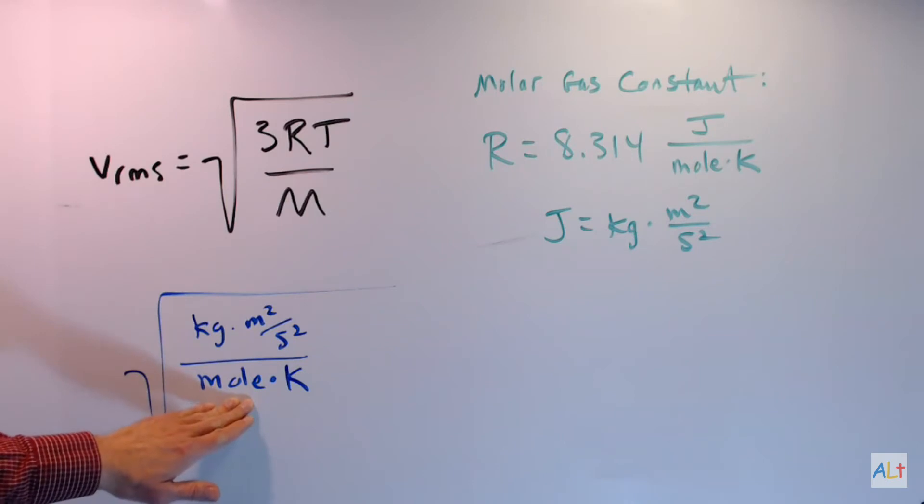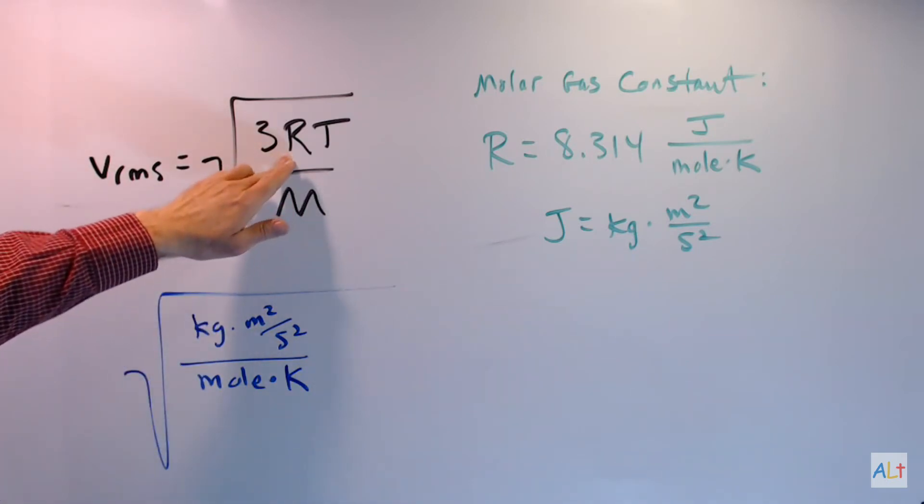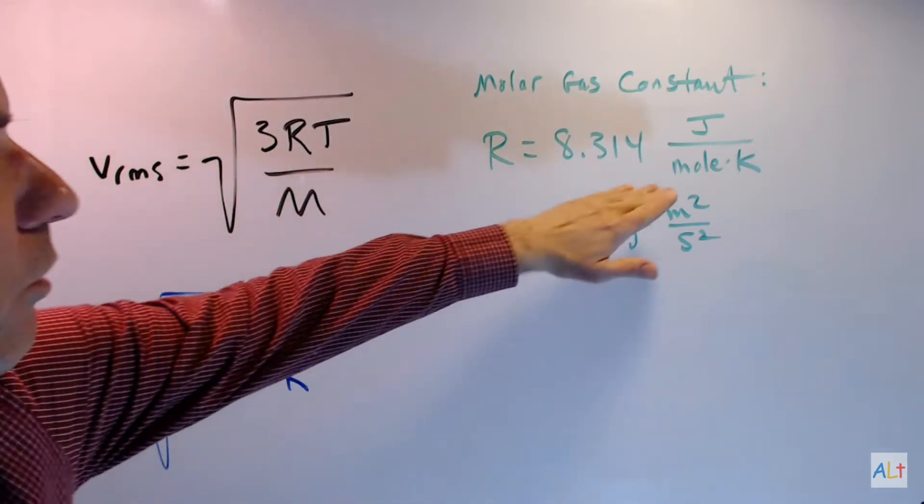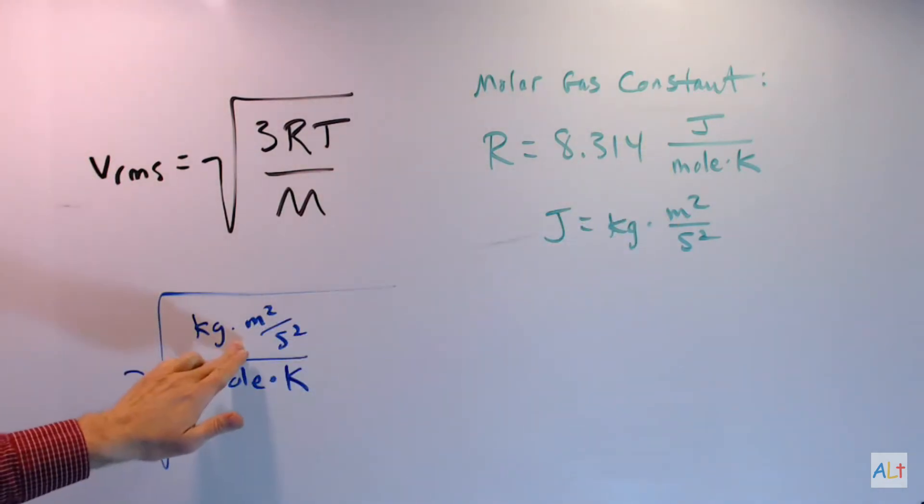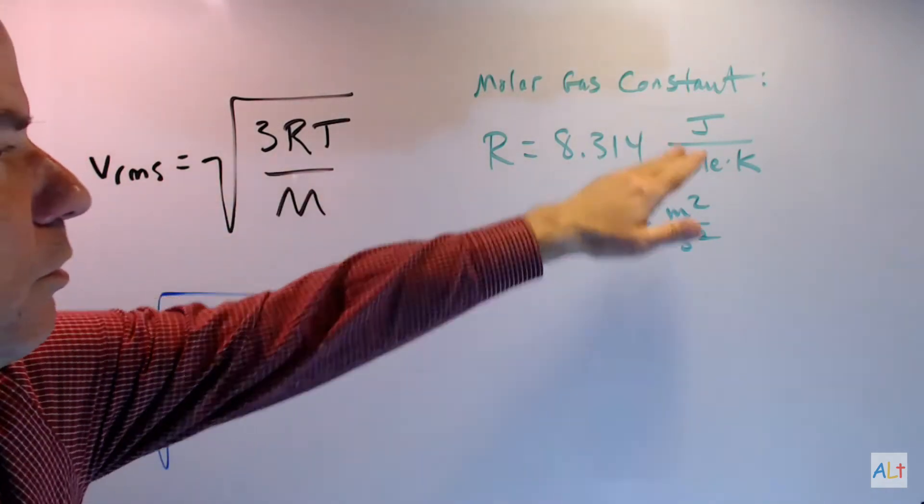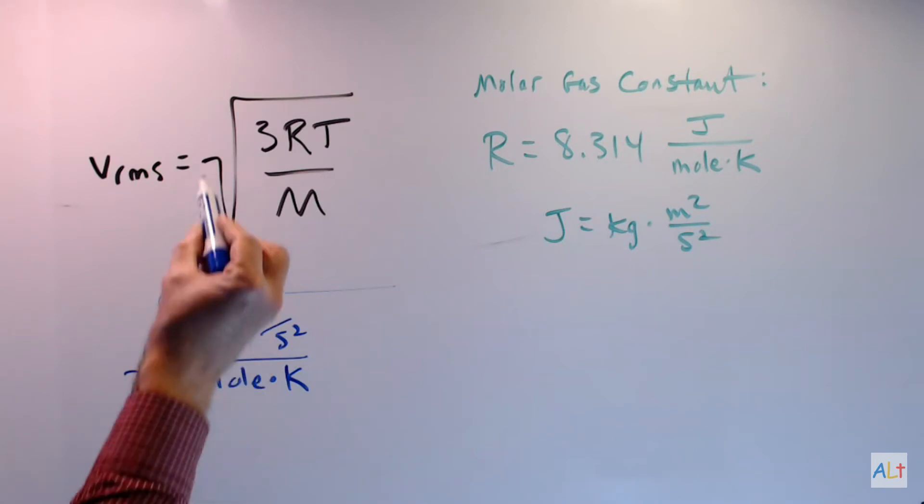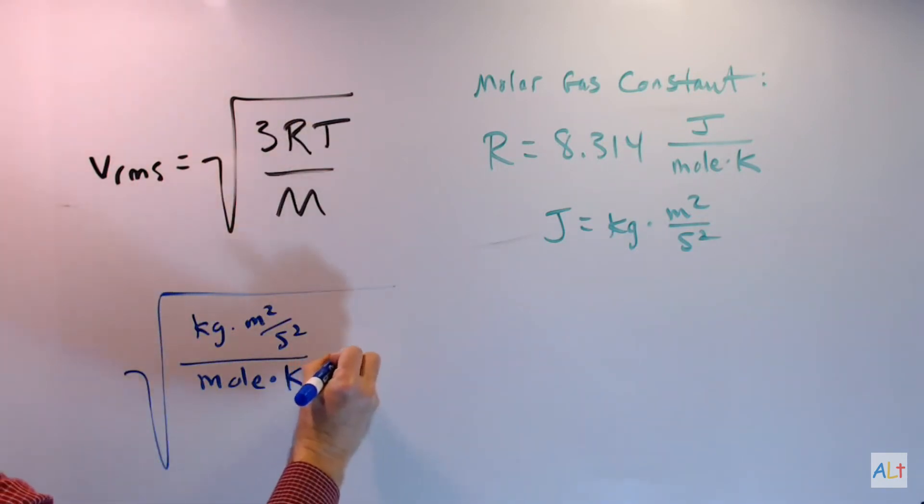All of this is just the units for the molar gas constant. There's moles and kelvins in the denominator. And then that's the joule in the numerator. We're multiplying that times temperature, which is kelvins. And then we're dividing by something which we're trying to figure out.